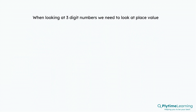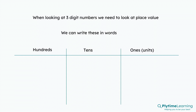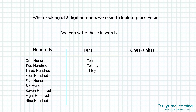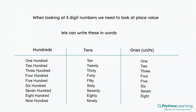When looking at three digit numbers, we need to make sure we look at the place value. We can write these same numbers in words. In our columns, we have 100 through 900 in the hundreds column, 10 through 90 in the tens column, and 1 through 9 in the ones column.